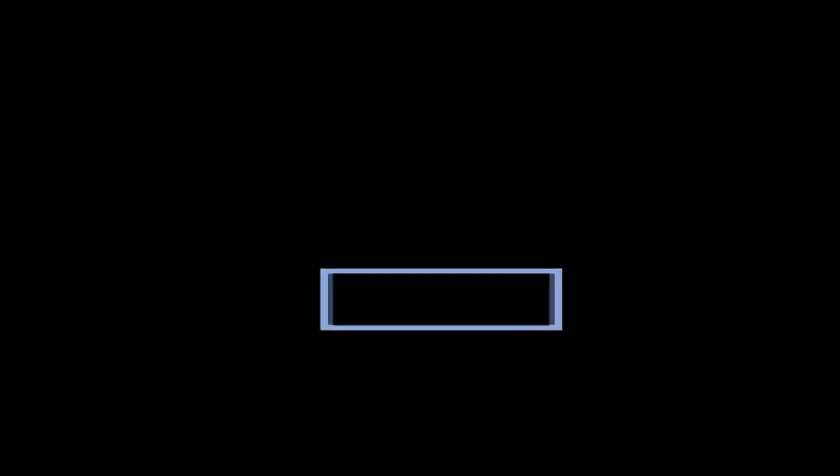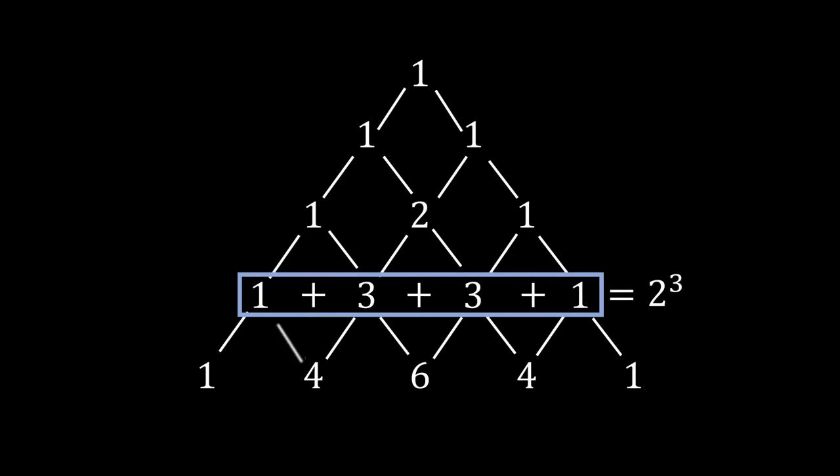Another pattern that I introduced at the beginning of the video is how the sum of each row is equal to 2 to the power of that row. Why? Well, adding the numbers in a row could be thought of as adding the total number of paths to each point in that row, thus giving the total number of paths to row 3, regardless of the point it must land on.